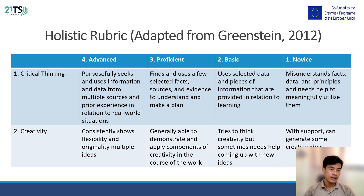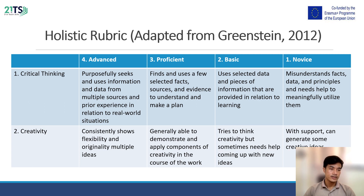Starting with critical thinking, there are four levels: knowledge, basic, proficiency, and advanced. At the advanced level, students purposefully seek and use information and data from multiple sources and prior experience in relation to real-world situations. At the proficiency level, students find and use a few selected fact sources and evidence to understand and make a plan. At the basic level, students use selected data and pieces of information that are provided in relation to learning.